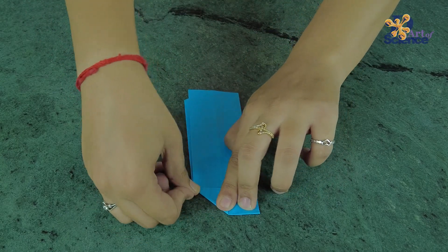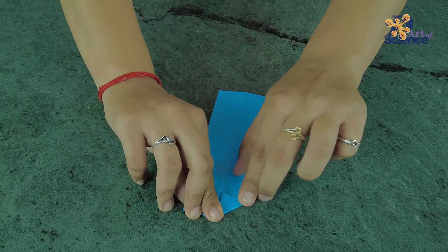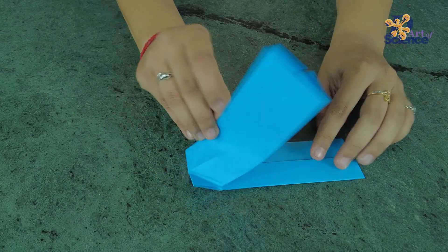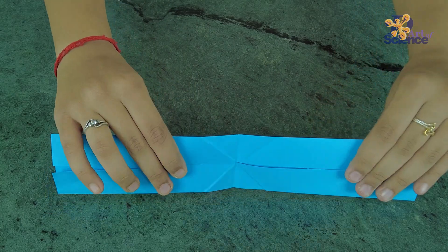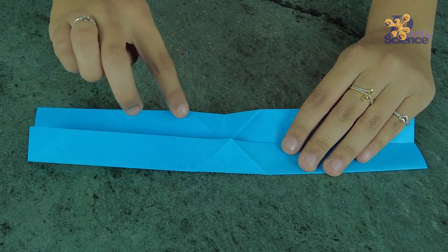Turn the paper around and repeat the same. Once you open the paper, you should see creases in a cross shape.